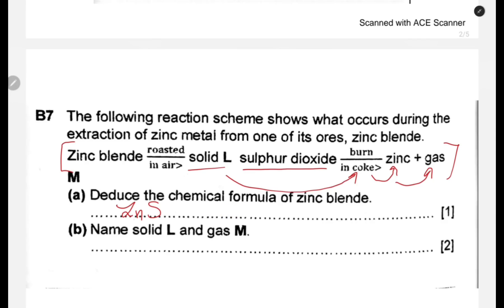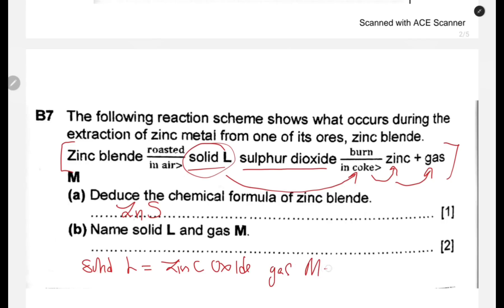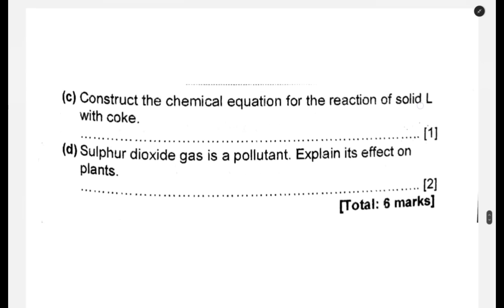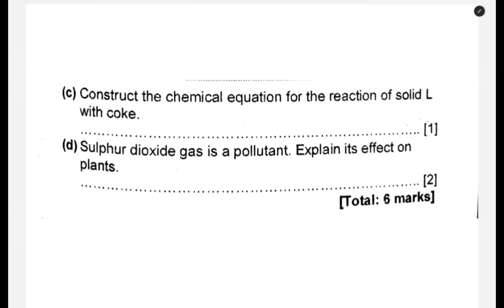Name solid L and gas M. Solid L is what is produced when zinc blende — which is zinc sulfide — is roasted, and what is produced is zinc oxide. So solid L equals zinc oxide. Then gas M equals carbon monoxide, as we saw from the first question. Construct the chemical equation for the reaction of L with coke. So L is zinc oxide, which reacts with carbon — which is coke — producing zinc metal plus carbon monoxide. That is the chemical equation. You can put in the state symbols as well.